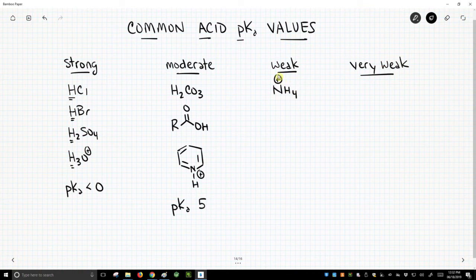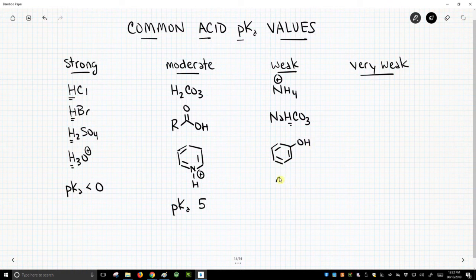Ammonium is an example. Bicarbonate is an example. That hydrogen is weakly acidic. There's a molecule called phenol. This is an alcohol coming off of a benzene ring. And then things that contain an SH. All fall within what I would call this weakly acidic category. These have a pKa of around 10.